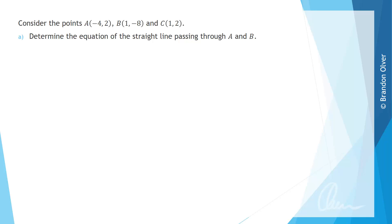For this question we want to consider the points A which has coordinates negative 4, 2; B with coordinates 1, negative 8; and C with coordinates 1, 2. For part A we want to determine the equation of the straight line passing through A and B.